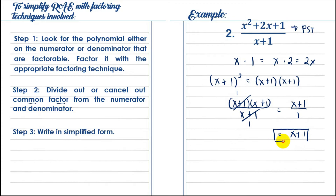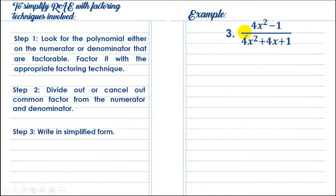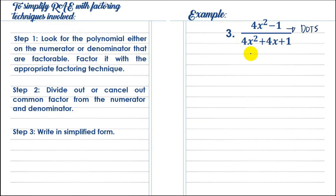The final answer for example number 2 is x plus 1. For example number 3, we have 4x squared minus 1 all over 4x squared plus 4x plus 1. We check if both are factorable. The numerator is a binomial with subtraction — it's a Difference of Two Squares (DOTS). For the denominator 4x squared plus 4x plus 1, checking PST: square root of 4x squared is 2x, square root of 1 is 1, their product doubled gives 4x, matching the middle term — it is a PST.